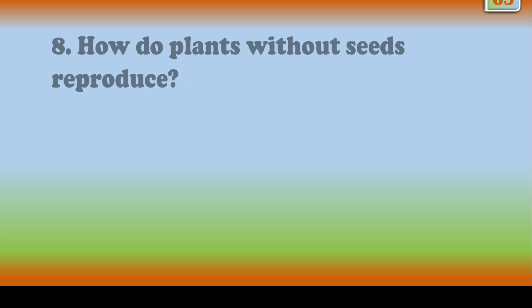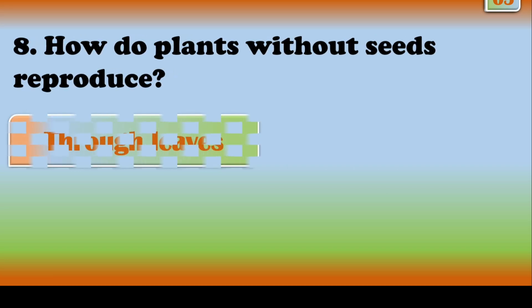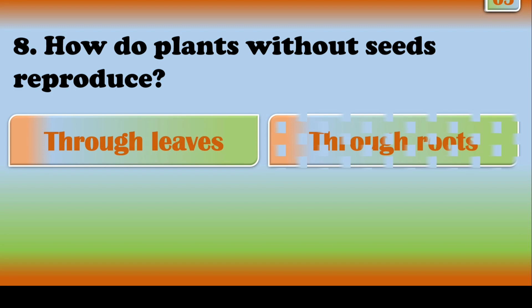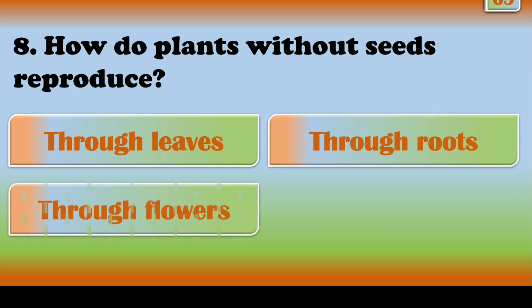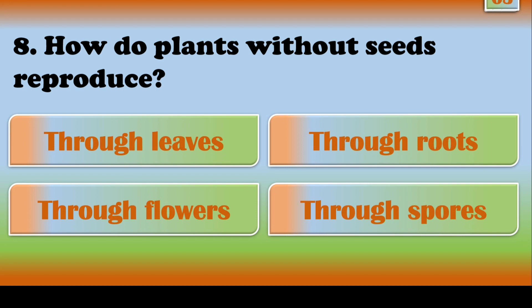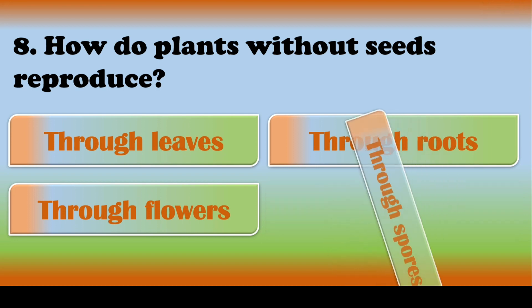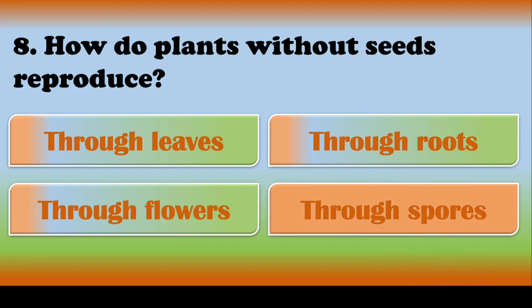How do plants without seeds reproduce? Through spores.